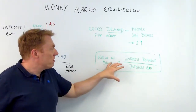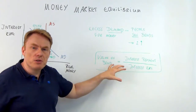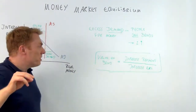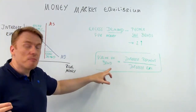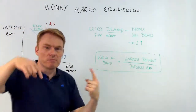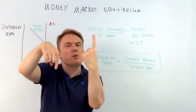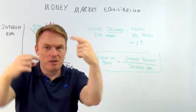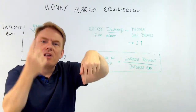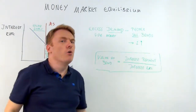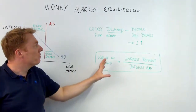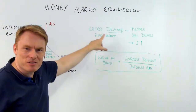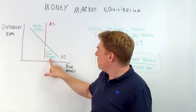That's the important equation for the value of bonds. What's interesting is that the value of a bond — the price of a bond — and the interest rate are negatively correlated. If the interest rate goes up, the value of a bond goes down. If the interest rate goes down, the value of the bond goes up. There is a negative correlation between the two. So again, with excess demand for money...